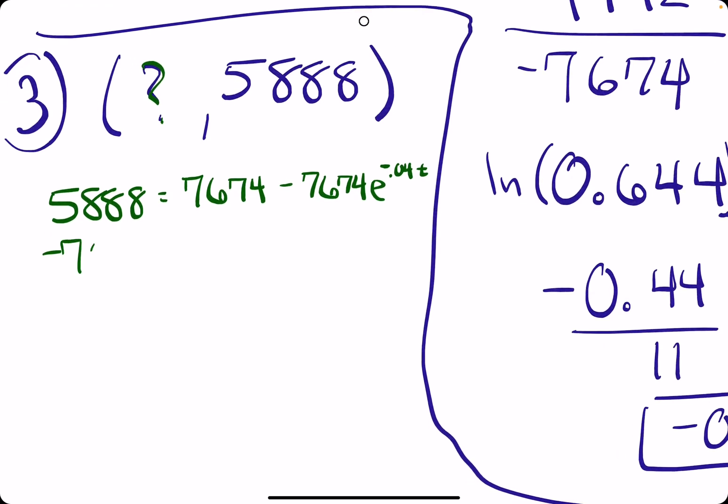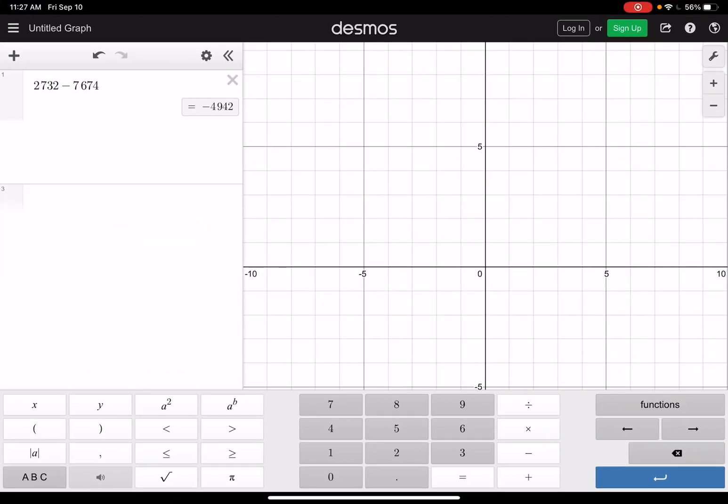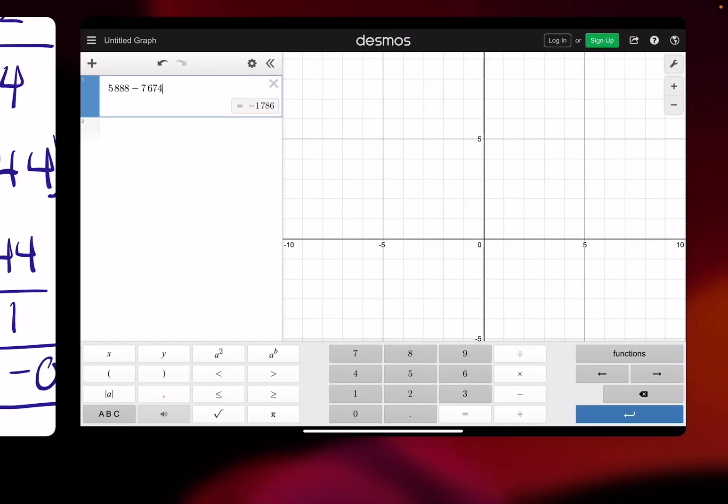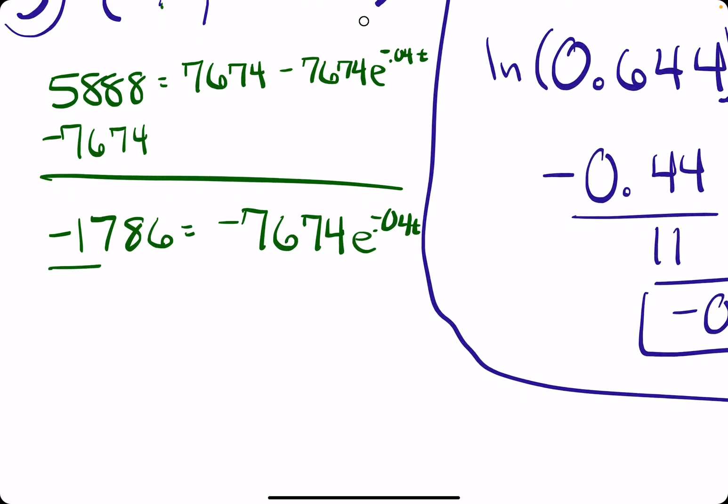We subtract 7674. 5888 minus that number gives negative 1786.